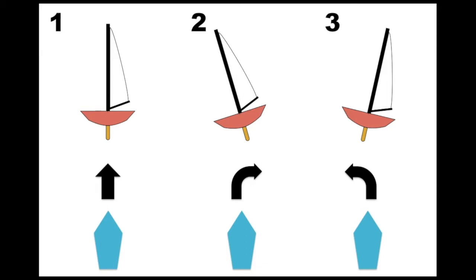In the diagram we're looking at three boats from behind. The first boat is flat and level with the water surface. The second boat is heeled to windward and the third is heeled to leeward.